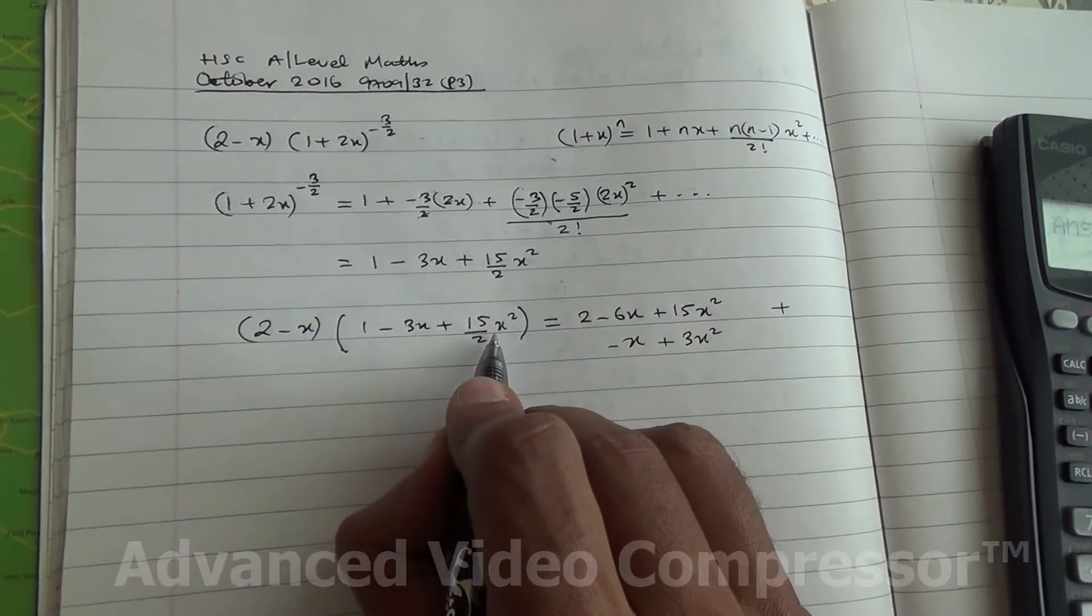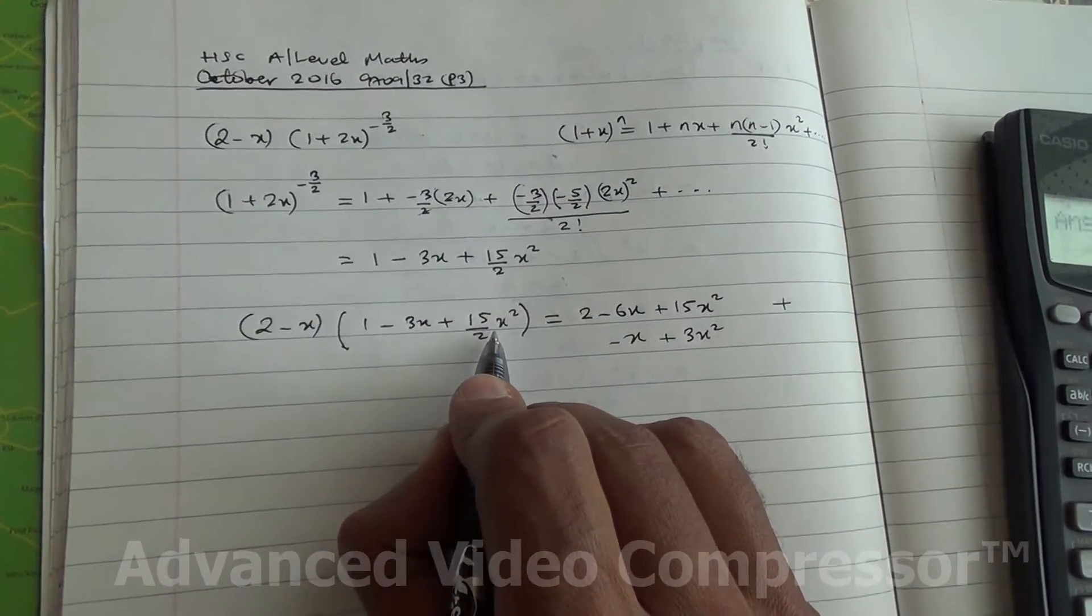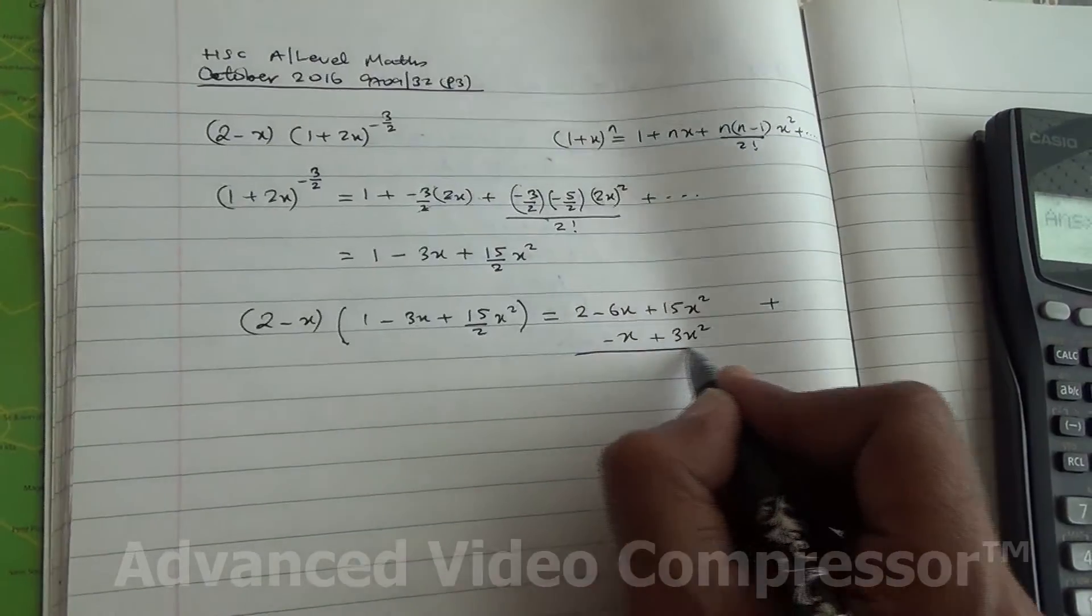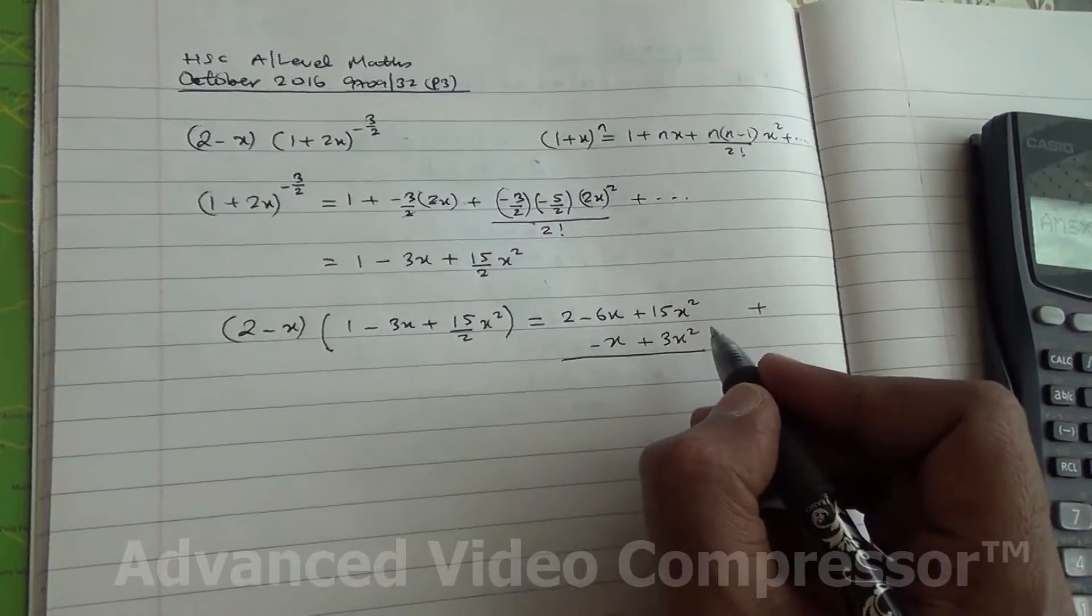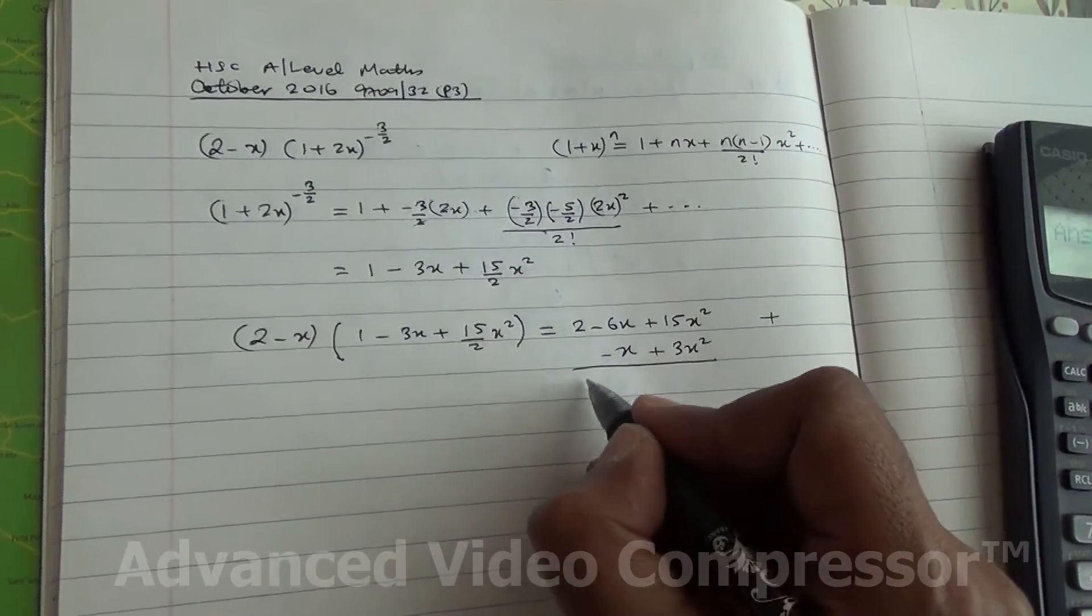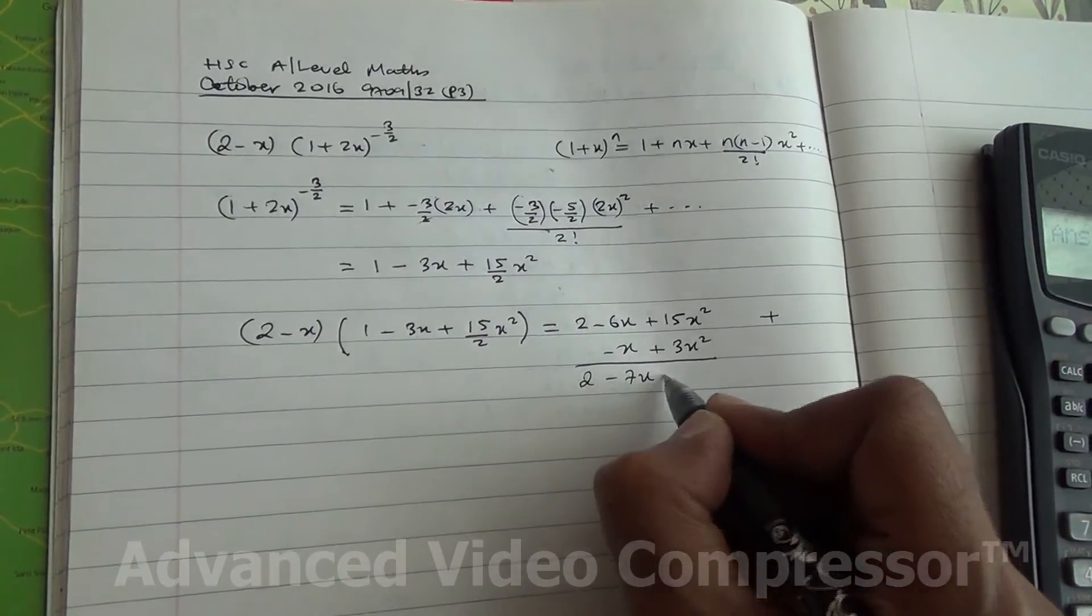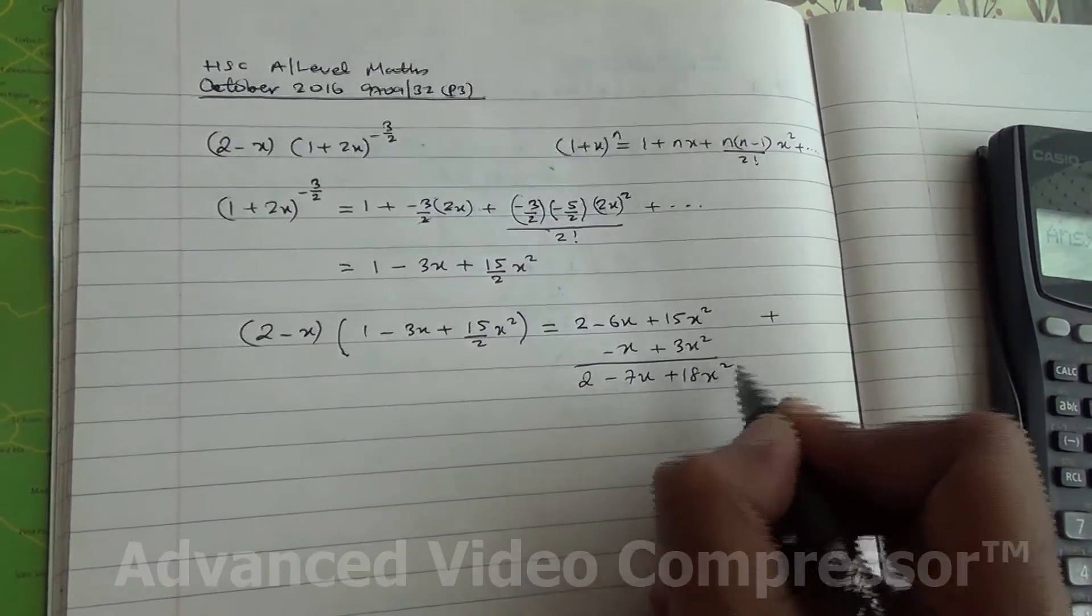Minus x times this is going to give you x cubed, so we don't take it, because we have to expand up to the term x squared. So then I've got 2 - 7x + 18x².